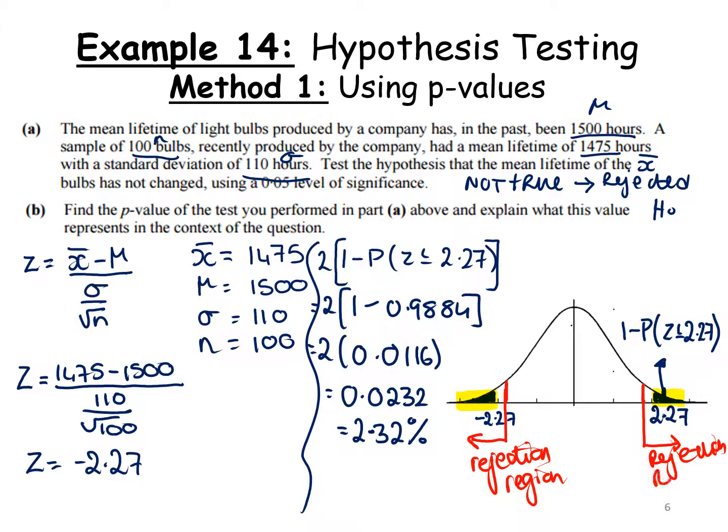There's minus 1.96 and plus 1.96. Everything this side and here are my rejection regions. It's too far out. It's not in that central 95%, so it's in those two tails outside my rejection region.